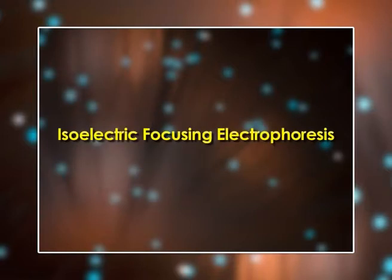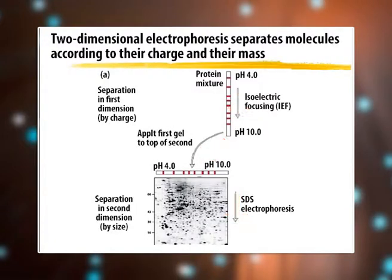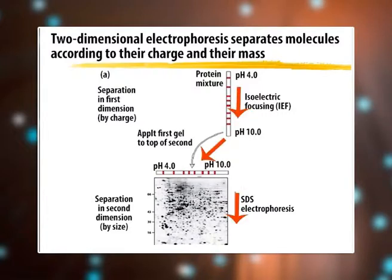Next, isoelectric focusing electrophoresis: this technique is a modification of electrophoresis in which proteins are separated by charge on a gel matrix that has a pH gradient across it. Proteins migrate to the location where the pH equals their isoelectric point and then stop moving because they are no longer charged. The last technique is two-dimensional electrophoresis: isoelectric focusing and SDS-PAGE are used together to improve resolution of complex protein mixtures. Proteins are separated in one direction by charge using isoelectric focusing and then in a perpendicular direction by size using SDS-PAGE.